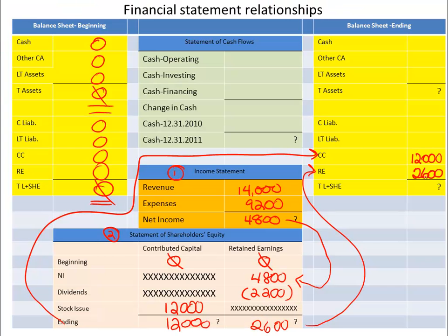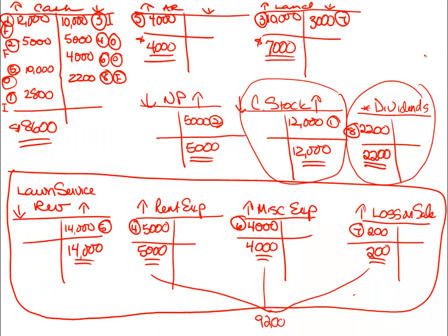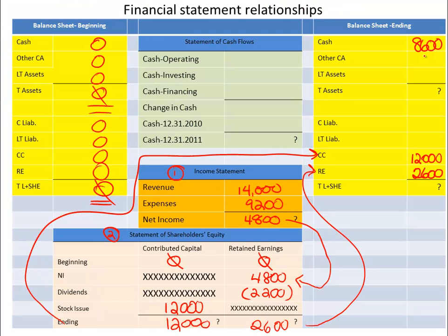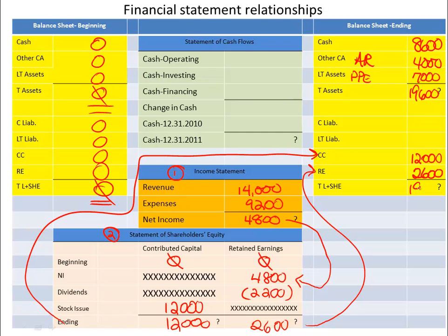For assets on the balance sheet: cash came to $8,600, accounts receivable is $4,000, and property, plant, and equipment is $7,000. Adding those all together, total assets come to $19,600. That means liabilities plus shareholders' equity also has to equal $19,600.